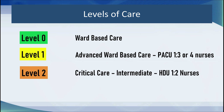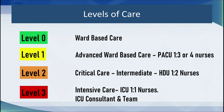Level two care is intermediate care or high dependency care. In the part of the world I work in there is a one-to-two nurse-to-patient ratio, sometimes one-to-three as in North America. Level three care is intensive care. In the UK and Ireland that's a one-to-one nurse-to-patient ratio; in North America it may be one-to-two. It is characterized by the presence of a dedicated ICU consultant. Levels two and three are both critical care units.